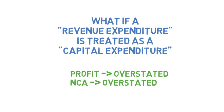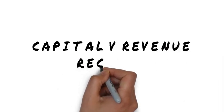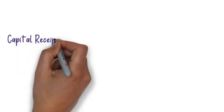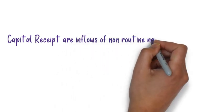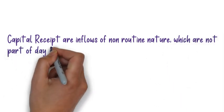Now let's look at capital and revenue receipts. A receipt is an inflow of the business, whereas an expenditure is an outflow. Capital receipts are inflows of a non-routine nature — we do not expect this money to come in every day or every week, as they are not part of the day-to-day activities of the business.